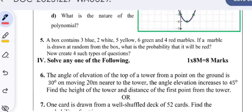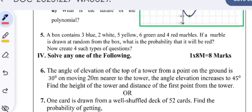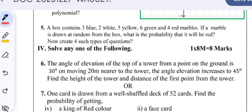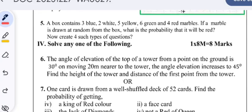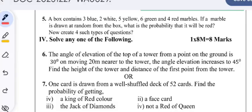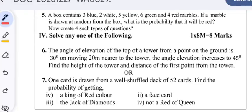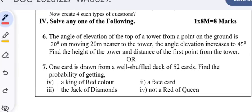A box contains 3 blue, 2 white, 5 yellow, 6 green, and 4 red marbles. If a marble is drawn at random from the box, what is the probability that it will be red? Now create four such type of questions. The answers are given at the end of this question paper.